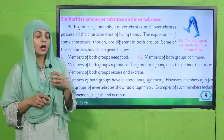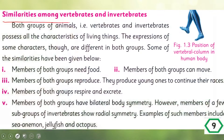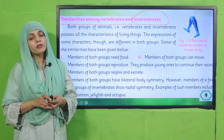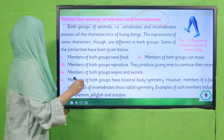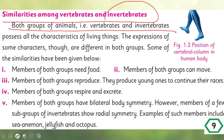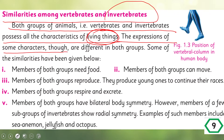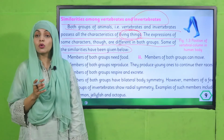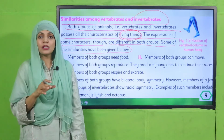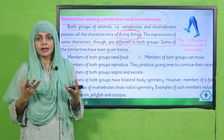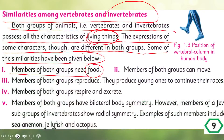On page number nine there are similarities among vertebrates and invertebrates. Both groups of animals possess all the characteristics of living things, though the expression of some characters differs. Some of the similarities are: members of both groups need food — both need energy so both need food. Members of both groups can move from one place to another.